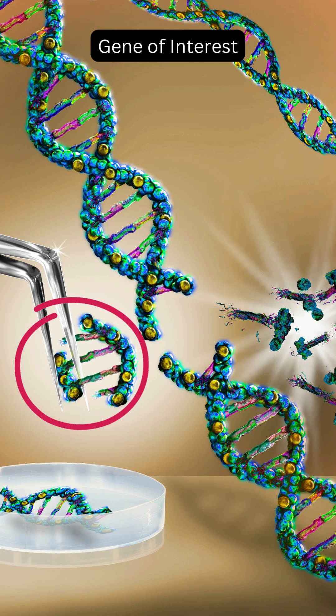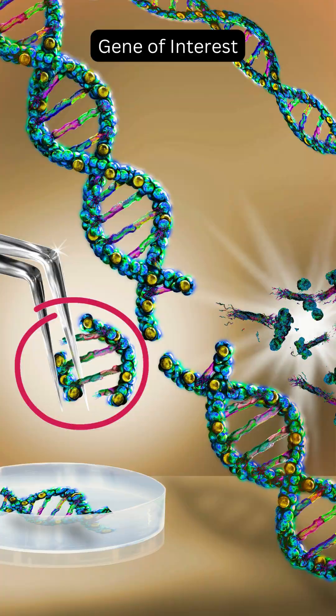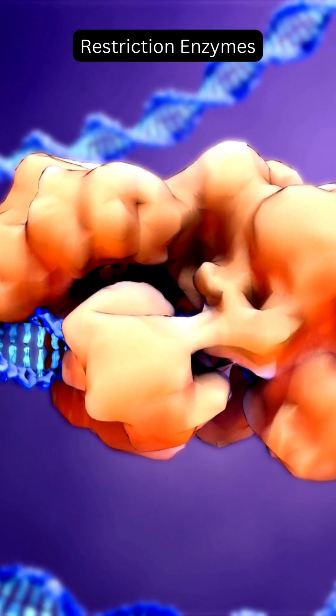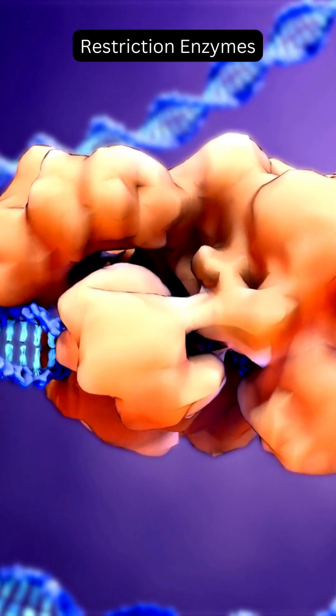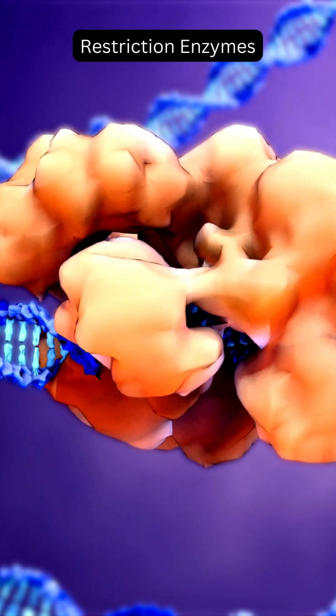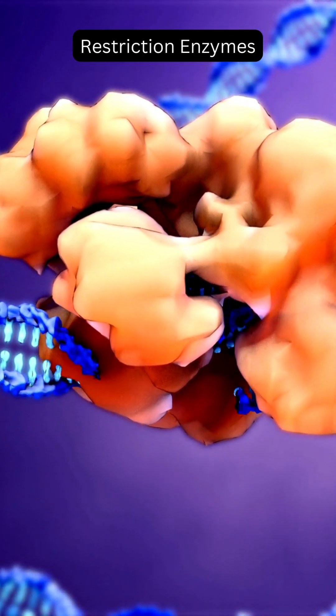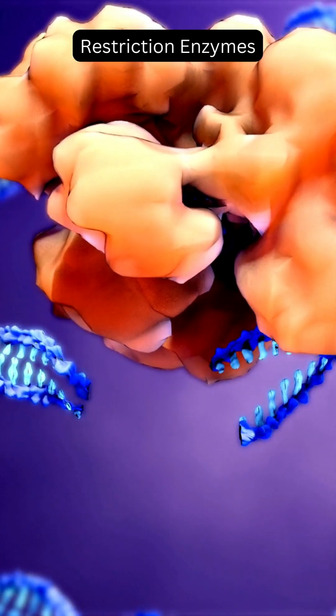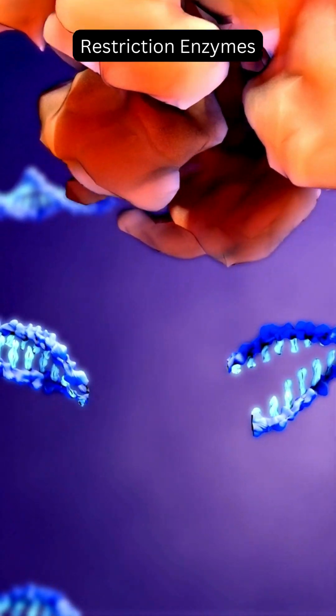Selecting the gene of interest, i.e., the specific gene to be cloned. Molecular scissors, or restriction enzymes, cut the DNA at specific sites to isolate the gene of interest.